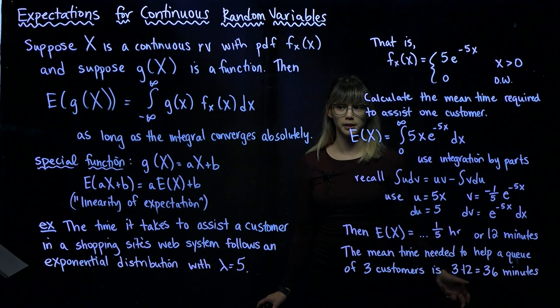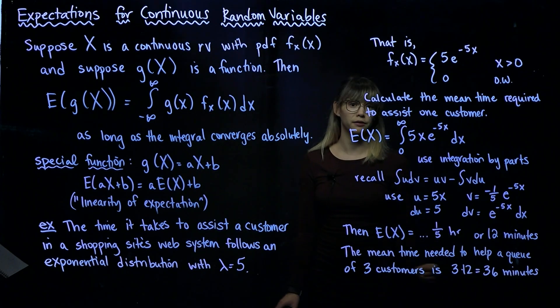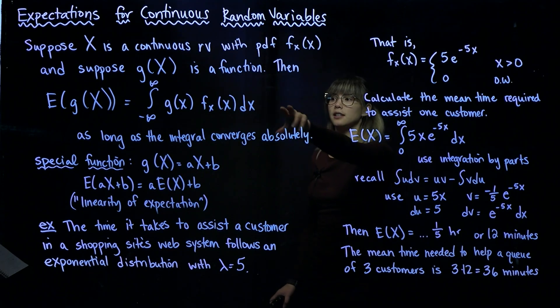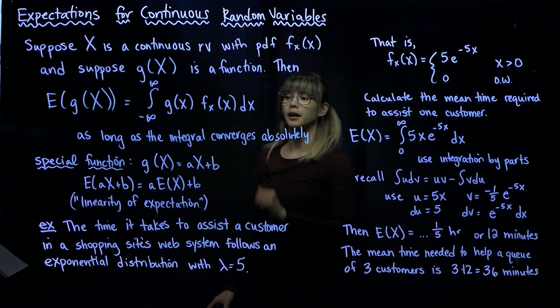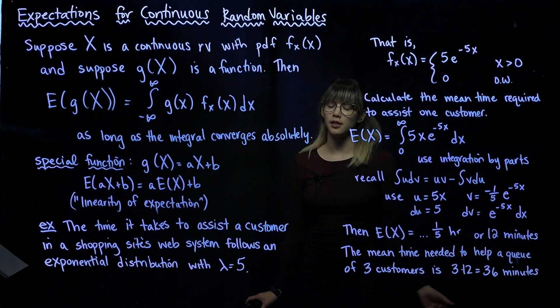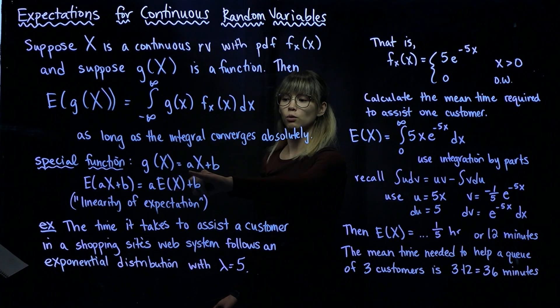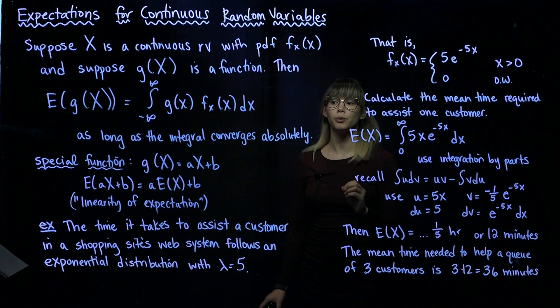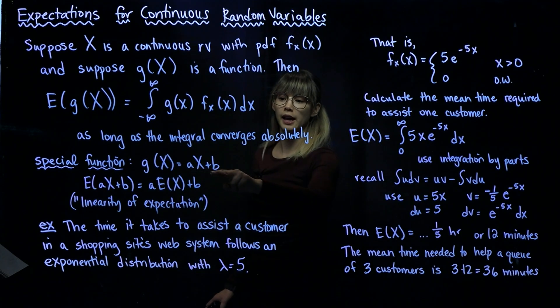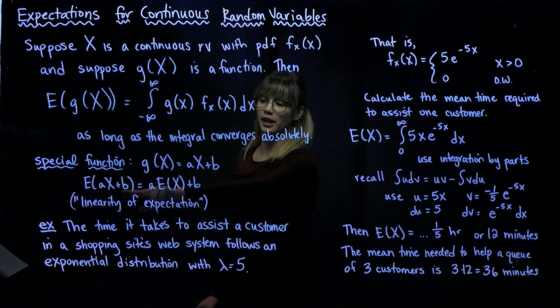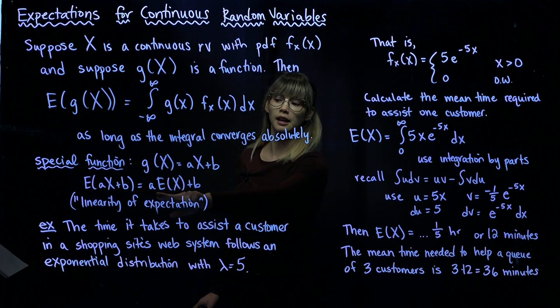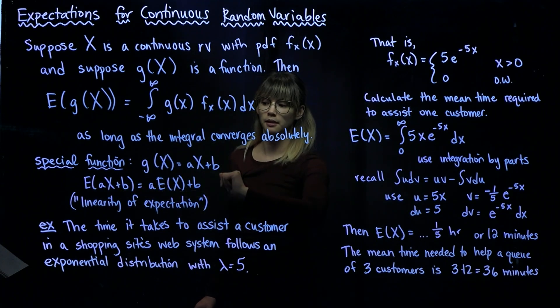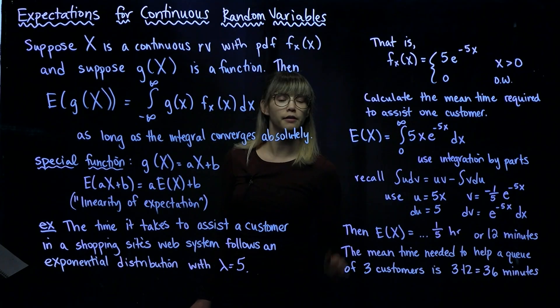Just like we've always said, this is only going to be true if the integral converges absolutely. This is the general case for any function g, but lots of times we're interested in this special function: g(X) equals some constant a times our random variable plus b. If we have g(X) = aX + b, then the expected value of aX + b is simply a times the expected value of X plus b. This is called the linearity of expectation.